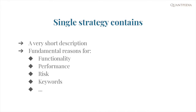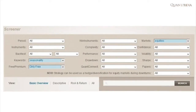Strategies on Quantipedia.com are presented in a form of strategy reviews. Each strategy consists of several parts. We provide a very short description and fundamental reasons for functionality and performance, risk, and various other characteristics extracted from source academics. Each strategy is also described by several keywords. Users can use our screening tool to screen and categorize strategies. For the purpose of this presentation, we have decided to focus on one trading style: seasonal anomalies.